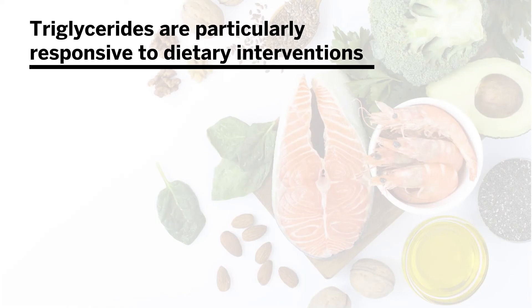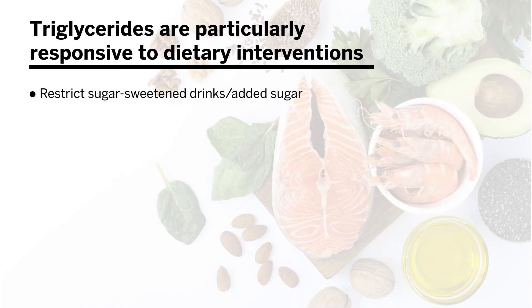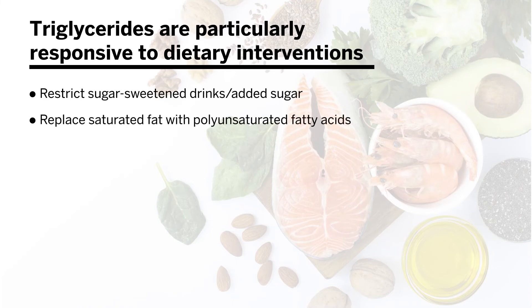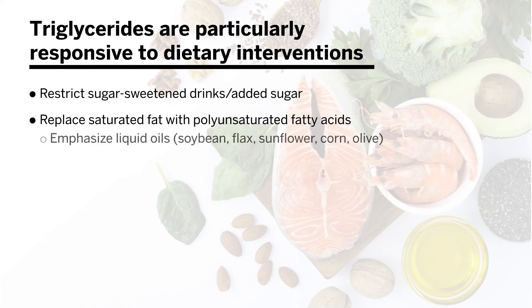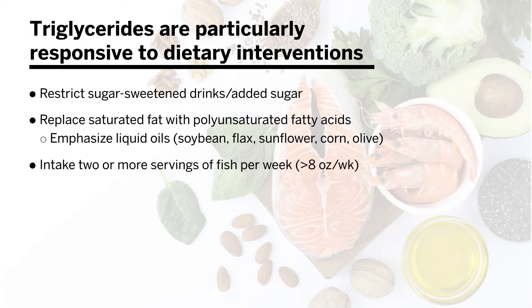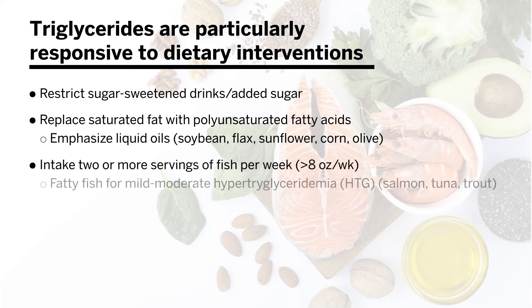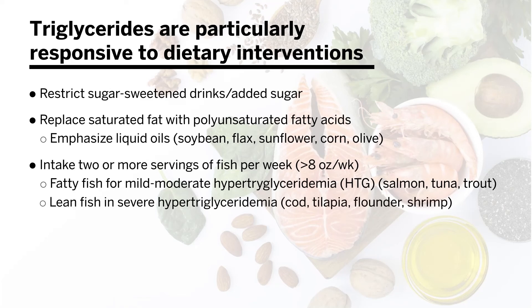Triglycerides are particularly responsive to dietary interventions. Specific recommendations include restricting sugar-sweetened drinks or added sugar; replacing saturated fatty acids with polyunsaturated fatty acids such as liquid oils — soybean, flax, sunflower, corn, or olive oils; and consuming two or more servings of fish per week — fatty fish like salmon, tuna, or trout for mild to moderate hypertriglyceridemia, or lean fish like cod, tilapia, flounder, or shrimp for severe hypertriglyceridemia. Also recommended is limiting or ceasing alcohol intake.